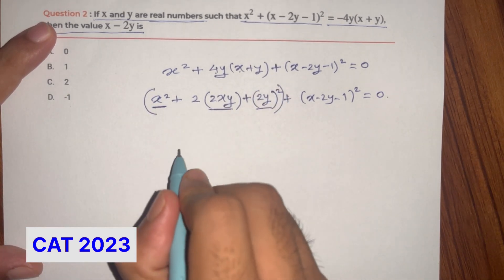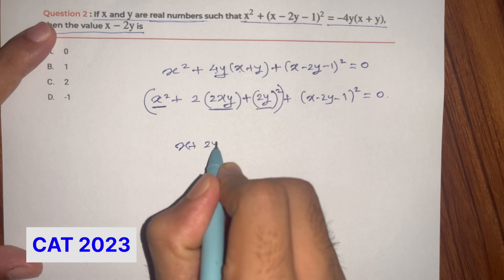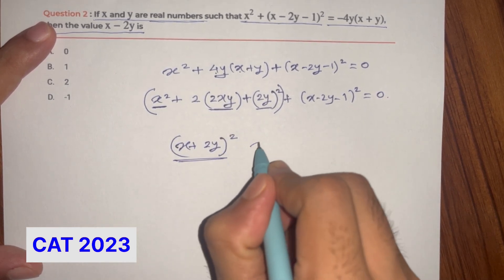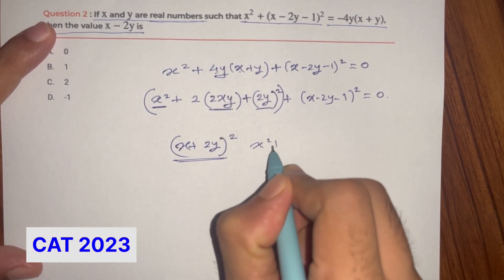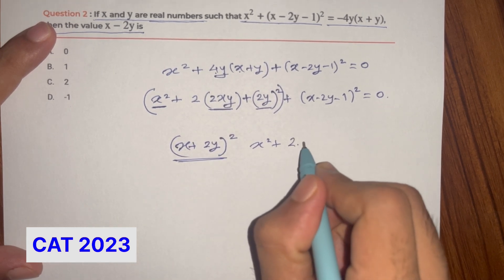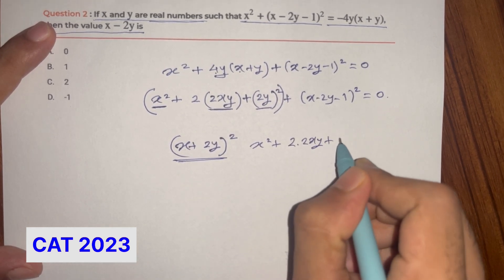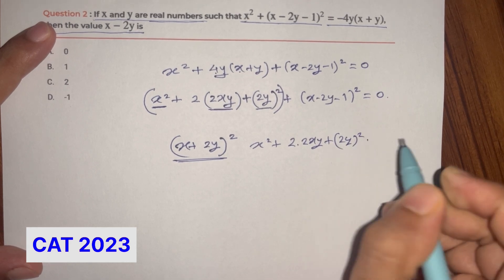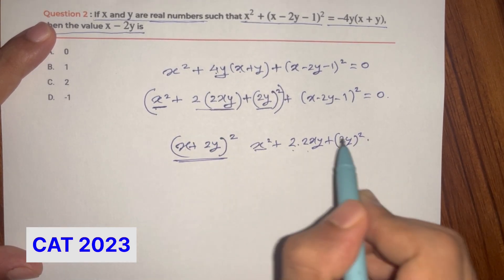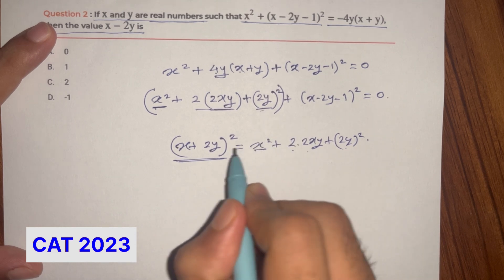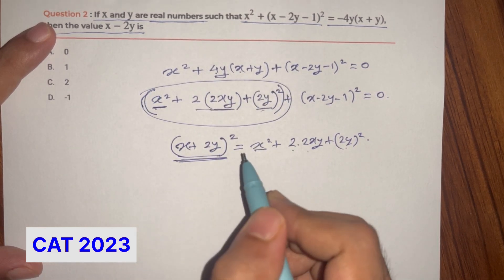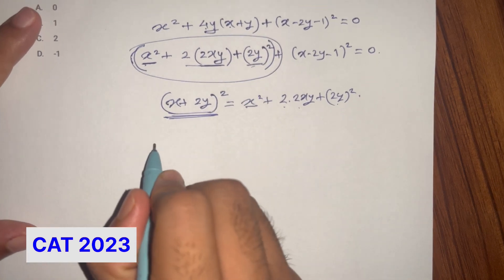Now notice this — this is the expansion of (x plus 2y) the whole square equal to 0. What is the expansion of (x plus 2y) whole squared? It is x squared plus x into 2y into 2, that is 2 into 2xy, plus 2y the whole square. So x squared, 2 into 2xy, and 4y squared — these match! So I will replace this with (x plus 2y) the whole square.